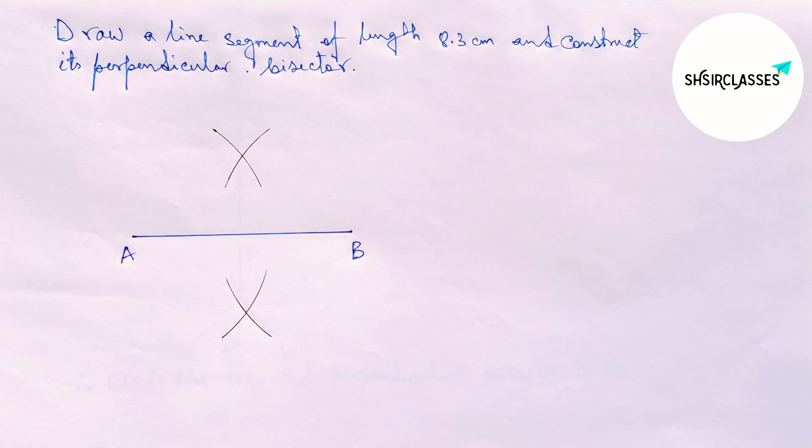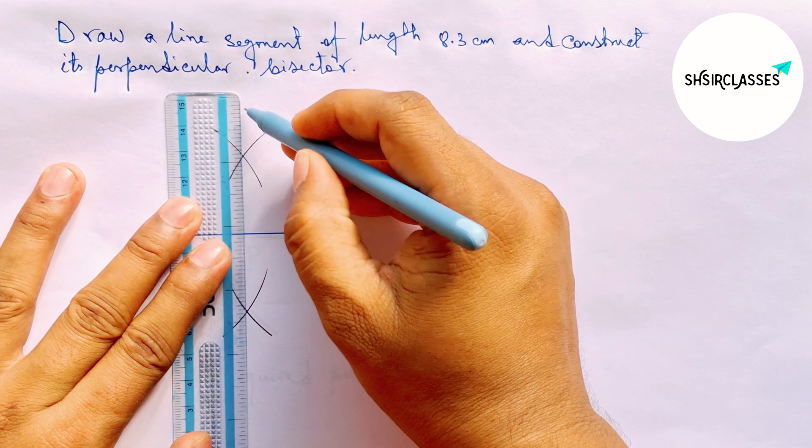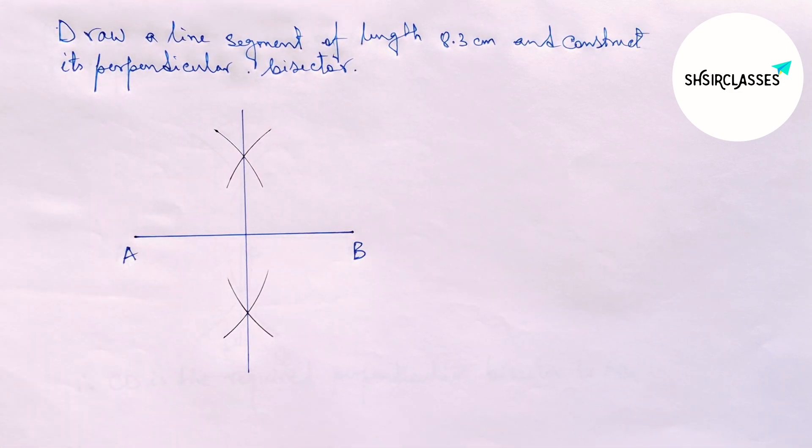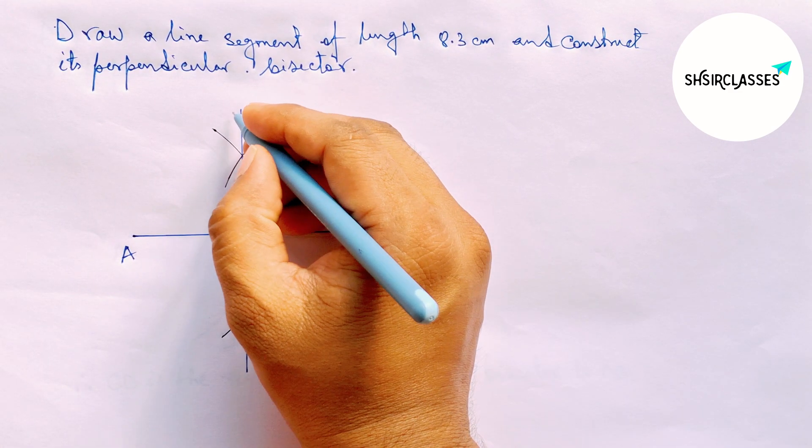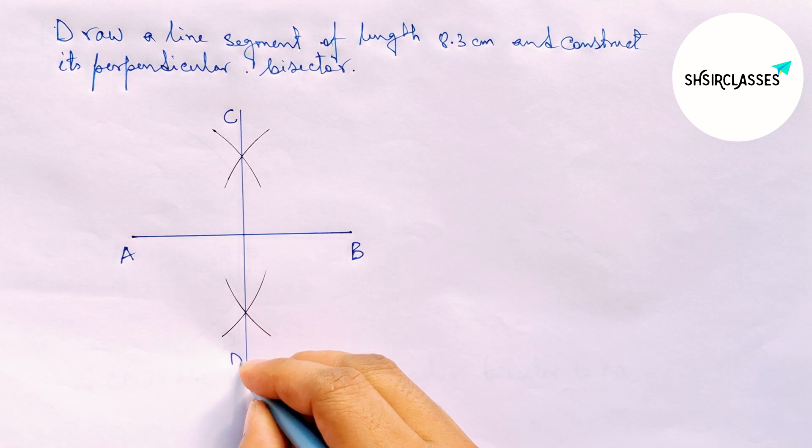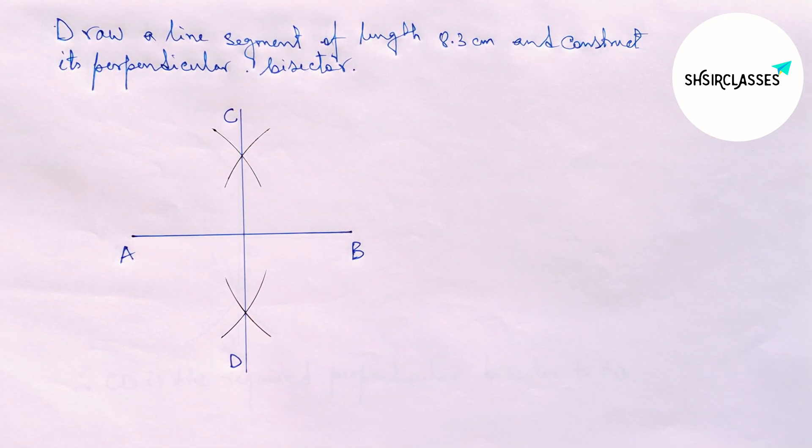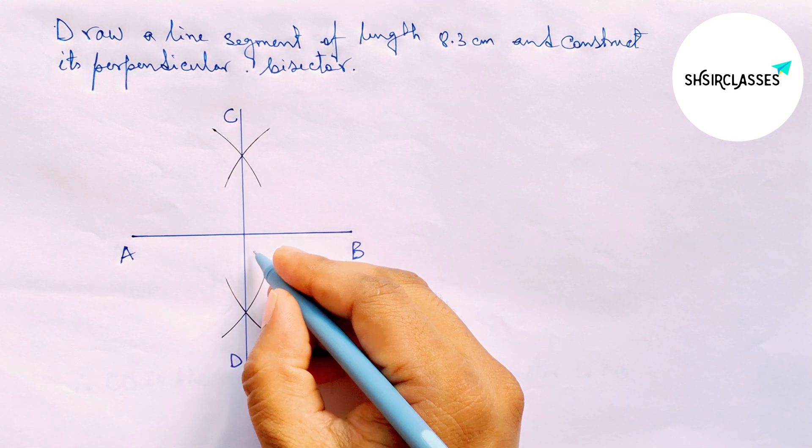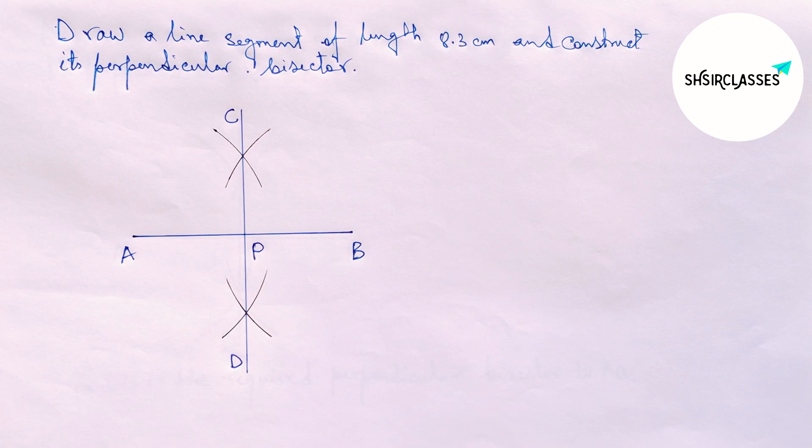Okay, now joining this and this is the required perpendicular bisector. So labeling here C and D. AB and CD both intersect here at a point, so taking point P.